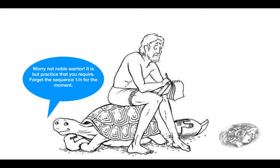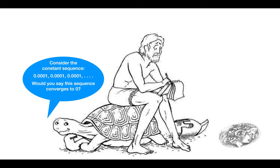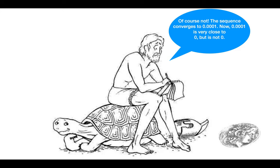Forget the sequence 1/n for the moment. Consider the constant sequence 0.0001, 0.0001, 0.0001 and so on. Would you say this sequence converges to 0? Of course not. The sequence converges to 0.0001. Now, 0.0001 is very close to 0 but it is not 0.